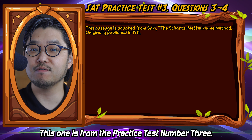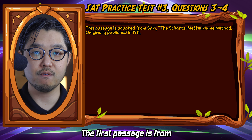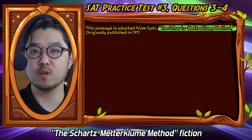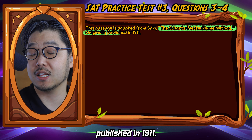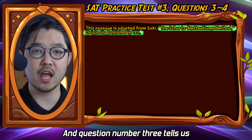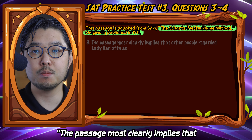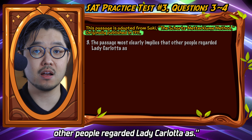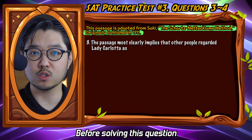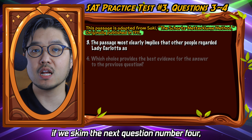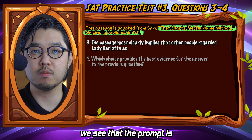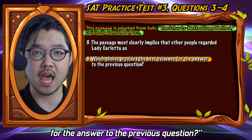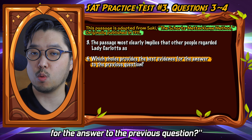This one is from practice test number three. The first passage is from the Schwartz Medical Method Fiction published in 1911. Question number three tells us: 'the passage most clearly implied that other people regarded Lady Carlotta as.' Before solving this question, if we skim the next question number four, we see that the prompt is 'which choice provides the best evidence for the answer to the previous question.'